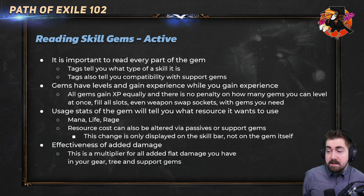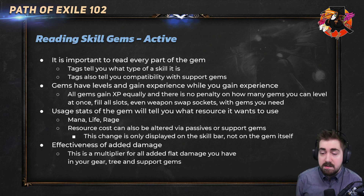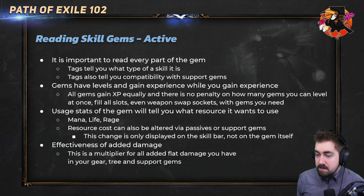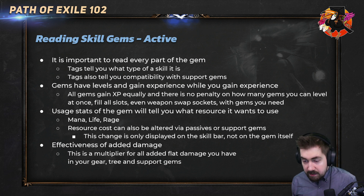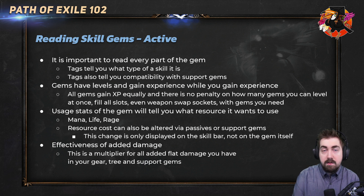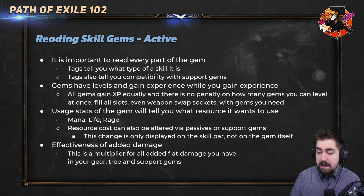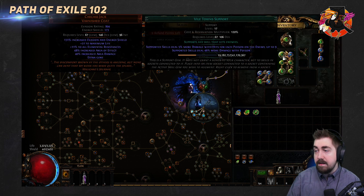Gems gain experience when you gain experience, and if you're leveling six gems in your offhand, all your gems are not leveling slower — so you should always be leveling as many gems as you can. They gain gem XP equally with no penalty at all. The usage stats of the gem will tell you what resource it wants to use — mana, life, or rage — and the resource costs can also be altered via passives or support gems. For example, you can make things cost life instead of mana. That change would only be shown on the skill bar, not on the gem itself.